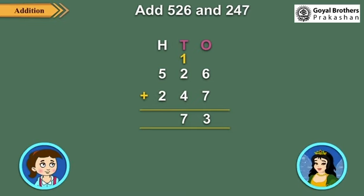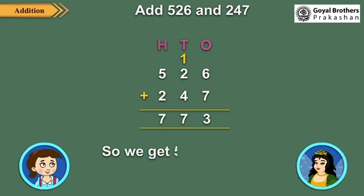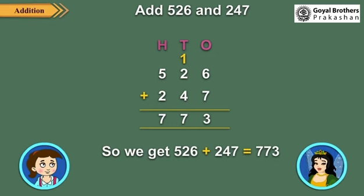Now add the hundreds. 5 hundreds plus 2 hundreds is equal to 7 hundreds, so write 7 under the hundreds column. So we get 526 plus 247 is equal to 773. Okay Tina, now I can do this type of addition easily. Good, Neha.